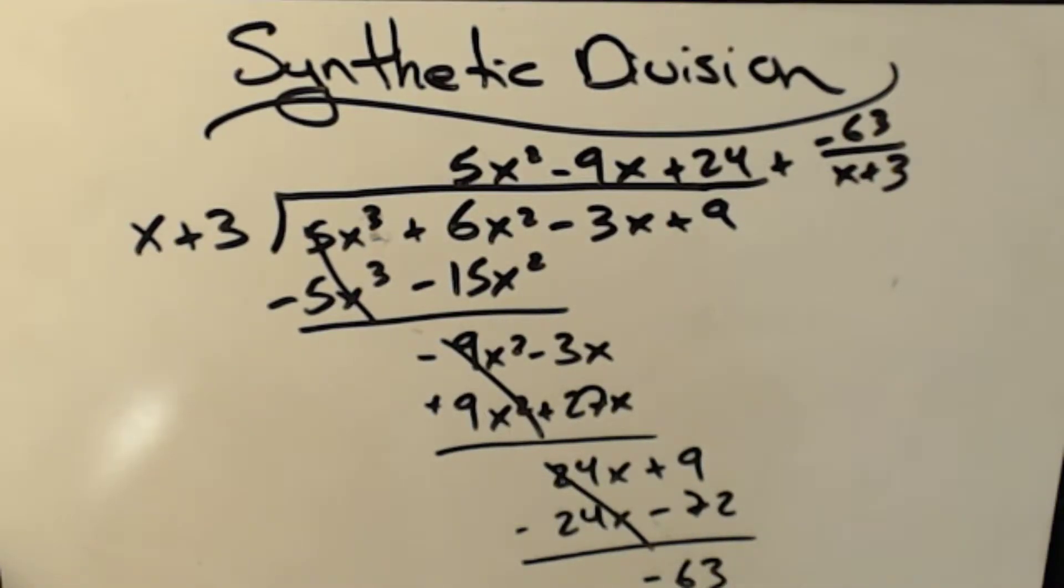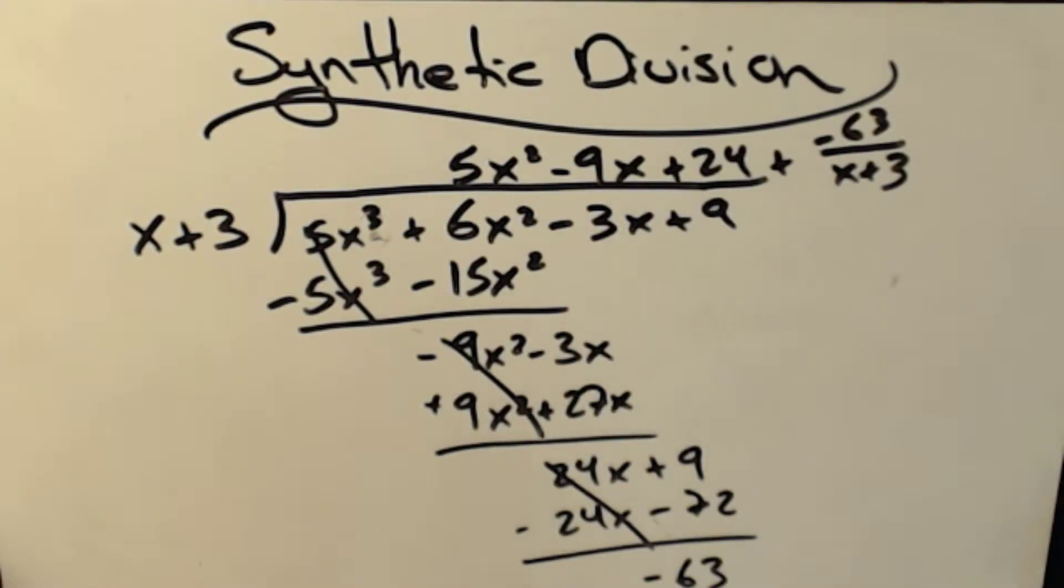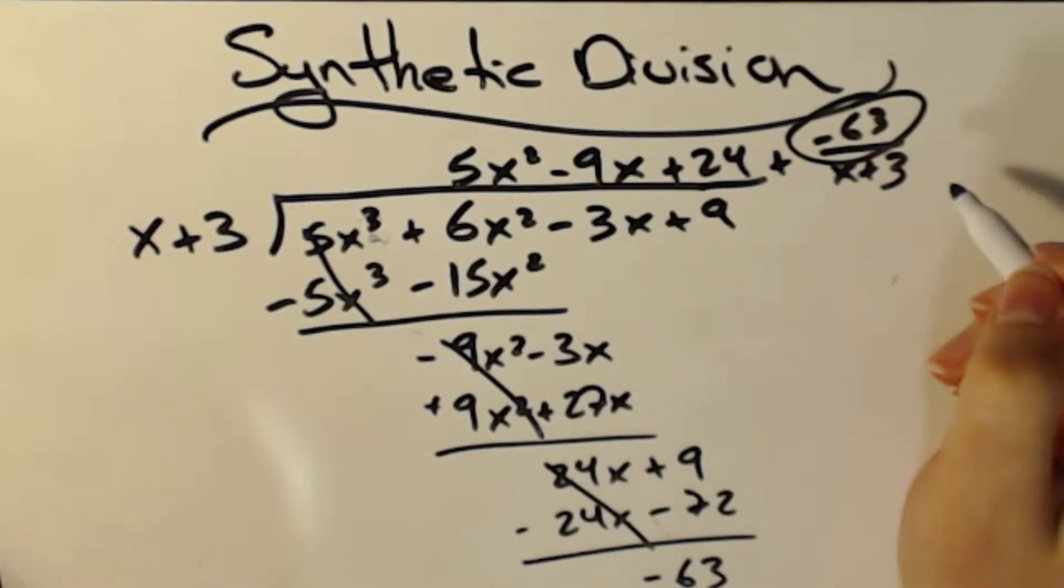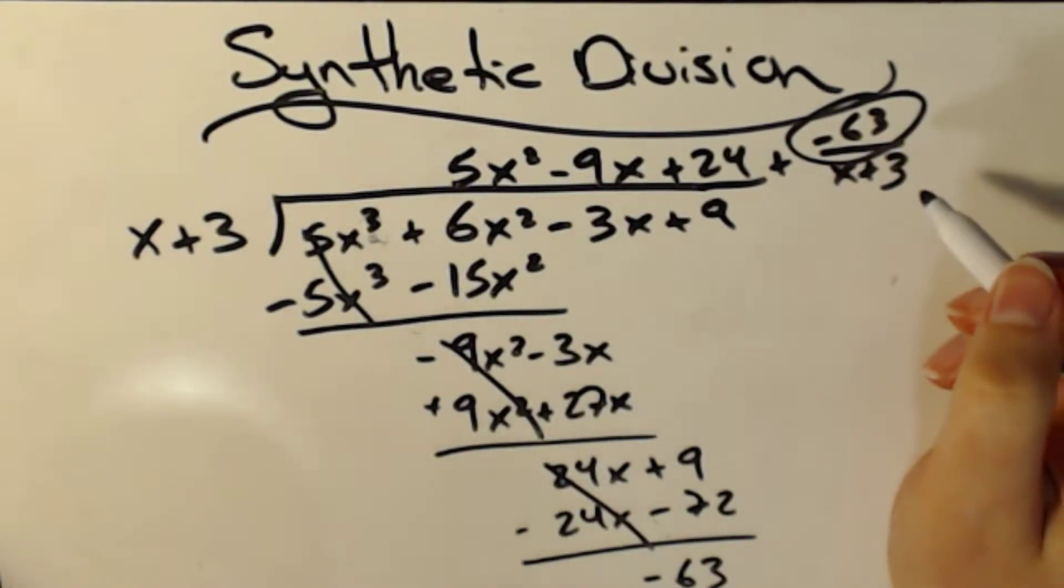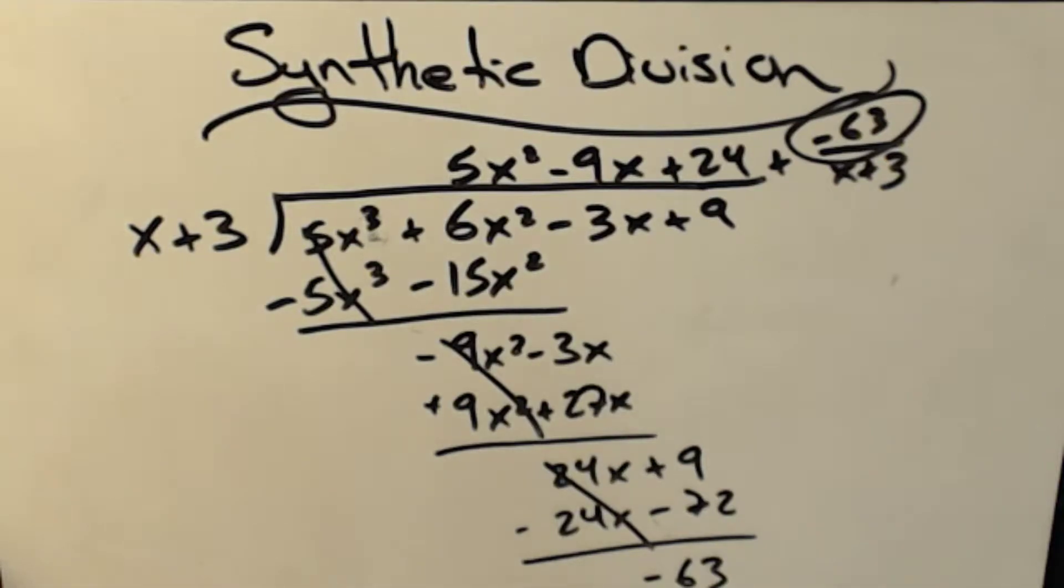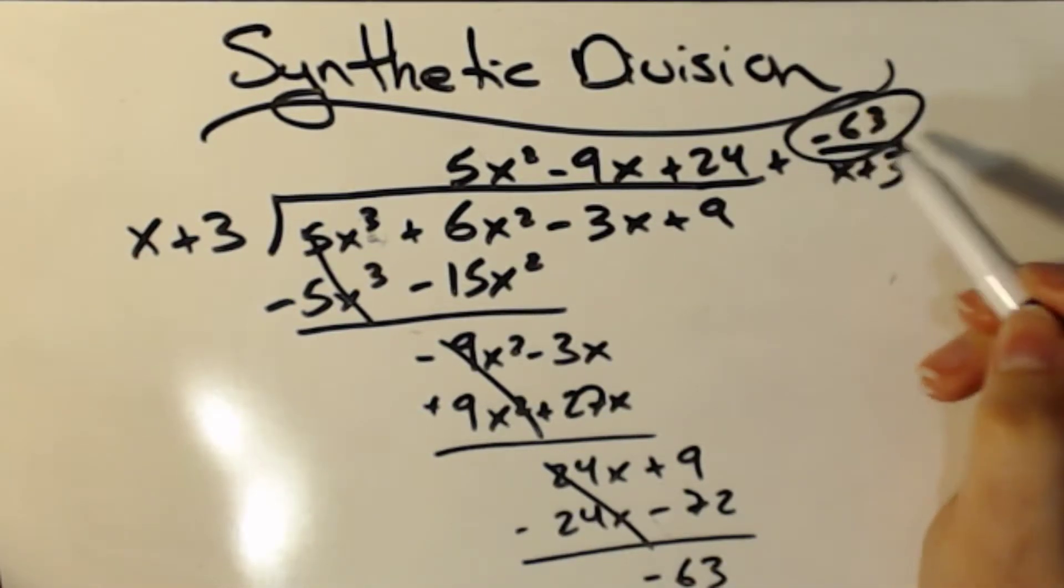So then I would say plus negative 63 over x plus 3 for my remainder. So that's how I do long division. Now what you're going to learn this week, aside from synthetic division in a moment, is a cool thing about this remainder here. A couple cool things about that remainder there.